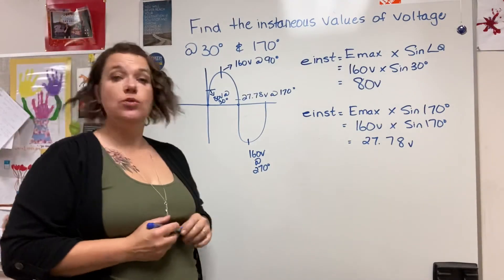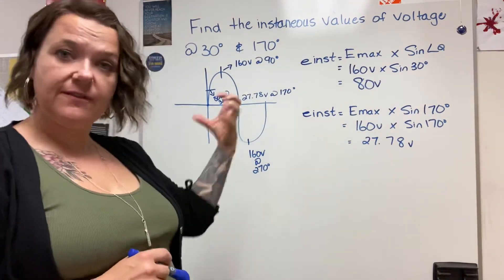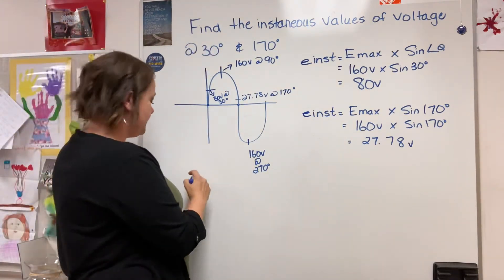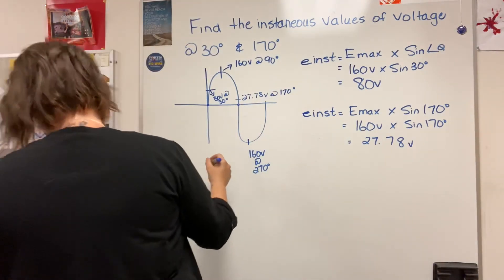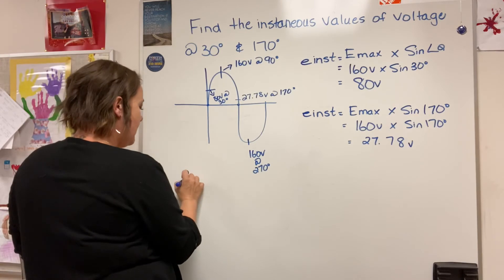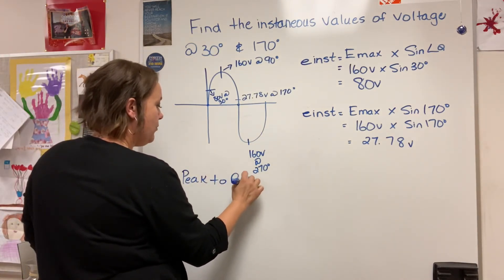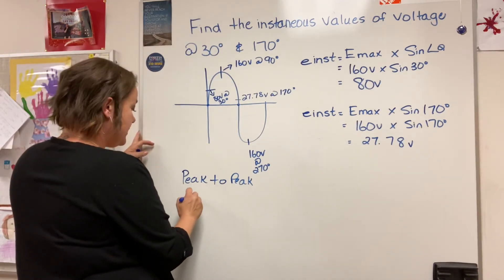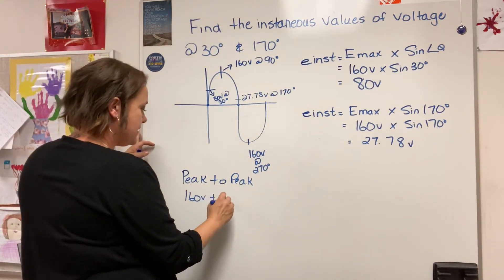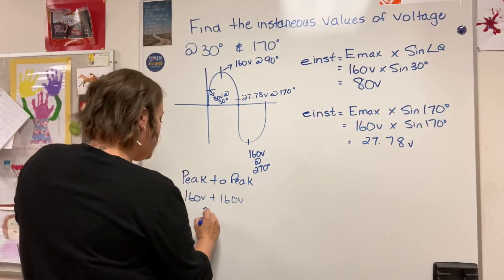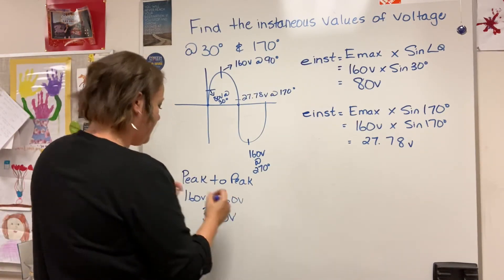If I were to ask you what our peak to peak voltage was of this sine wave, you would simply add your peaks together. It would be peak to peak, your maximum to your maximum, 160 volts plus 160 volts. Peak to peak works out to be 320 volts.